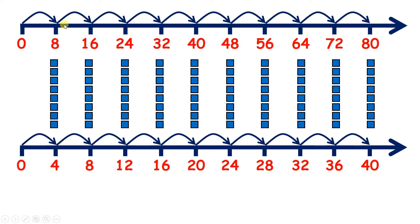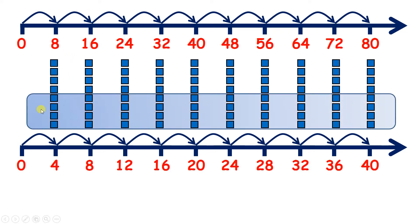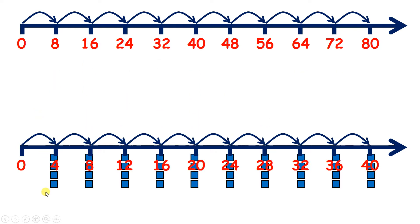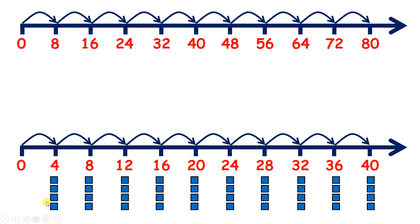Now here on the top line, we have our 8 times table. I've circled half of the blocks — the same amount of blocks are circled as not circled. So now if we get rid of the blocks that we've circled, if we get rid of half the blocks, we can see that we now have our 4 times table. So we got our 4 times table by halving our 8 times table, and remember halving is the same as dividing by 2. So half of 8 is 4, because 8 divided by 2 is 4.